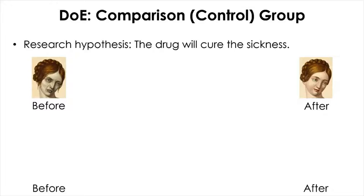There may be other reasons behind the recovery than the drug. For example, it may be purely psychological. To eliminate other alternative explanations of experimental results—other than the hypothesized effect of the experimental manipulation, in this case the drug—we need a control group.